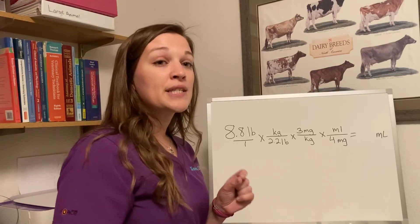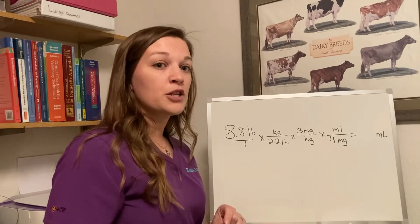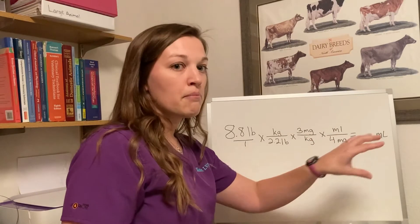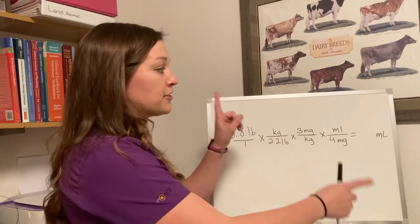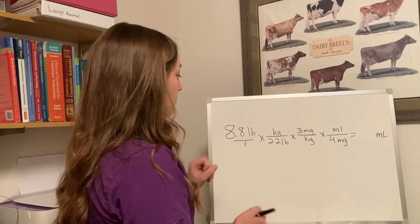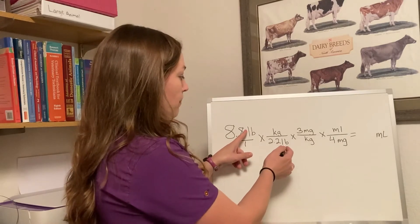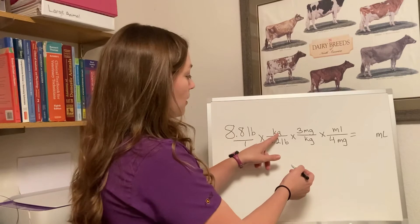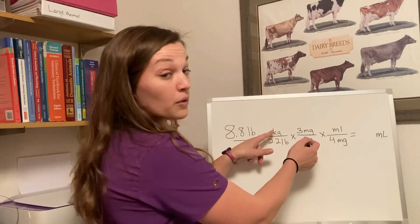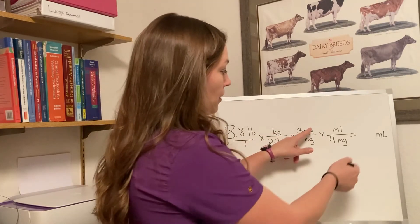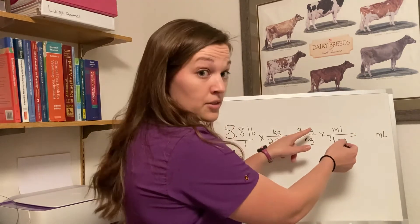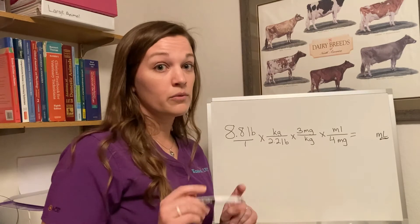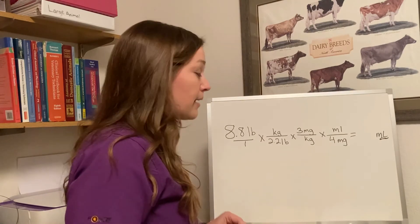The last basic principle: when we set up these equations, the labels cancel each other out when they are on opposite sides — top and bottom. So our pounds and pounds cancel each other out, kilogram and kilogram cancel each other out, milligram and milligram cancel each other out. That leaves us with our milliliters, which is what we need.